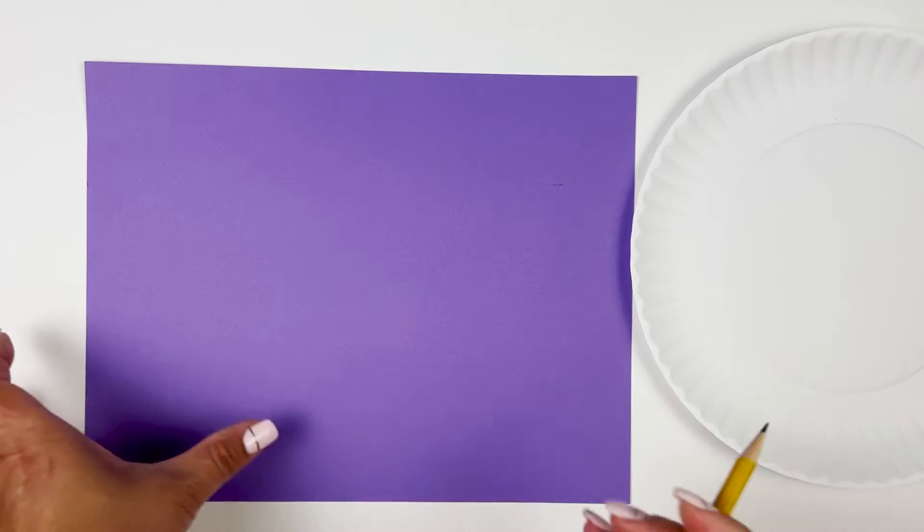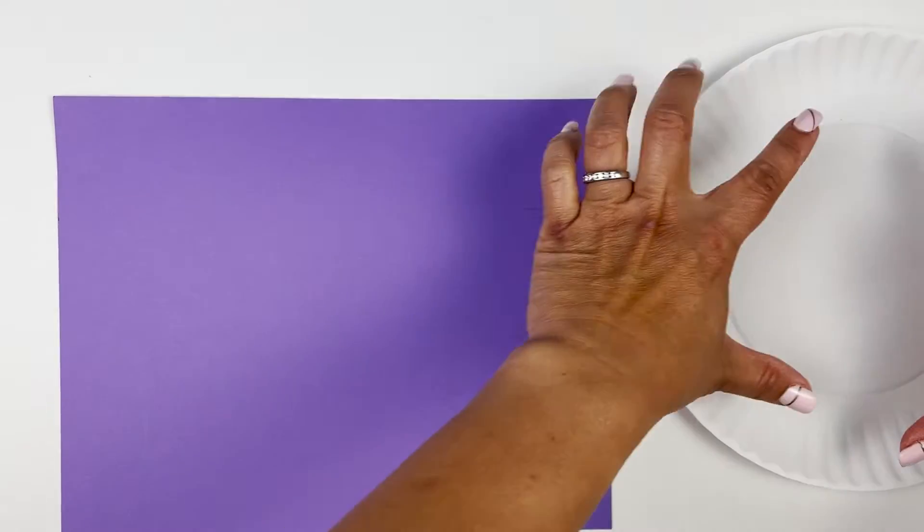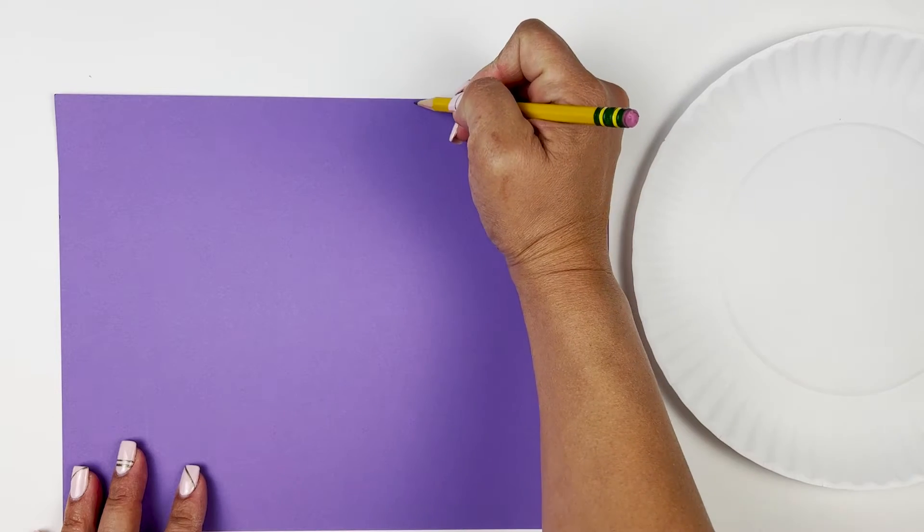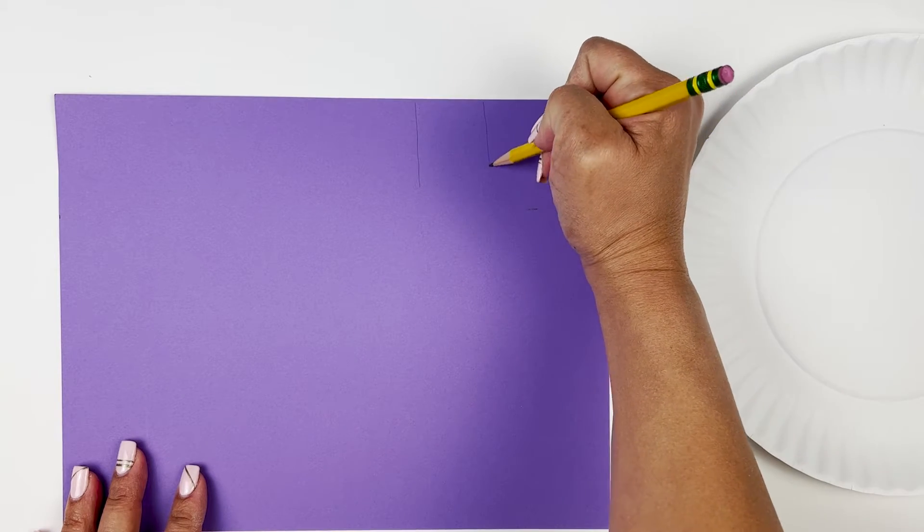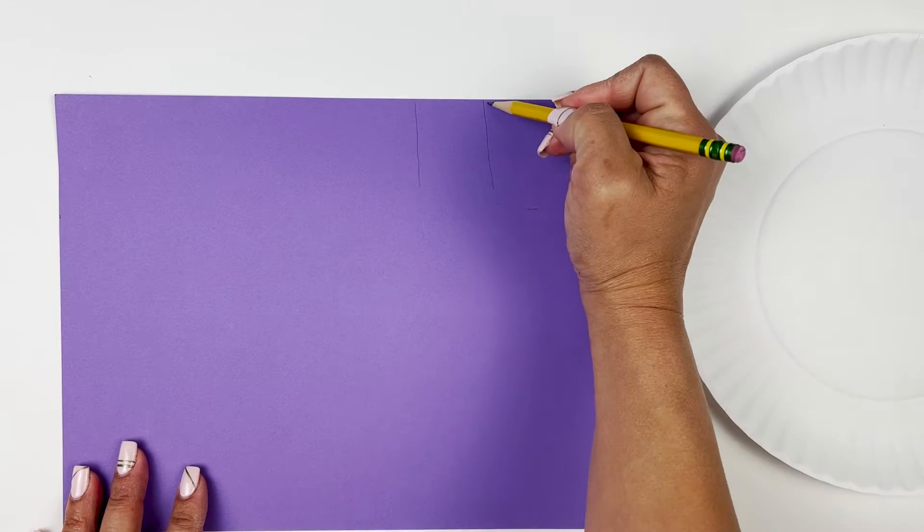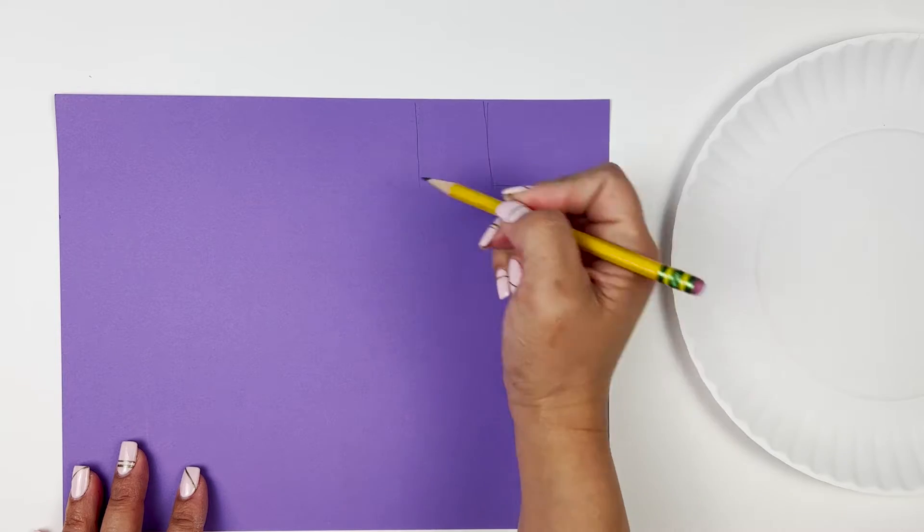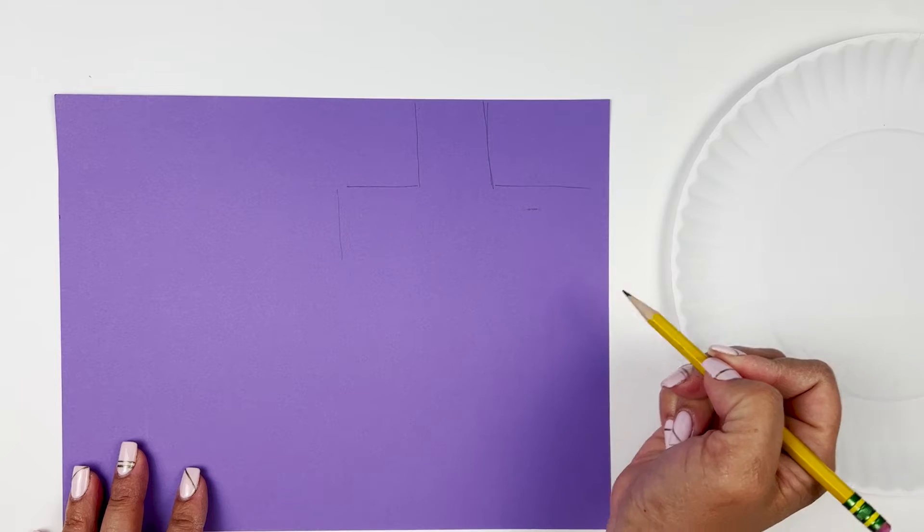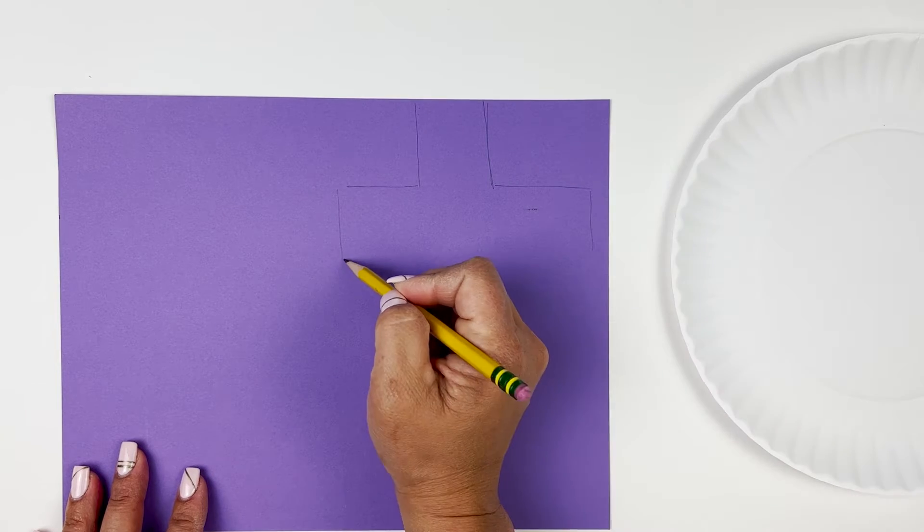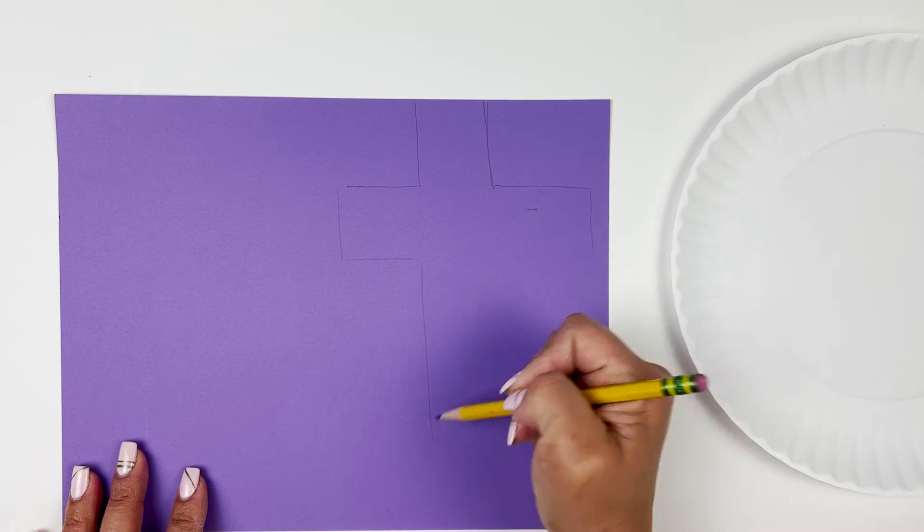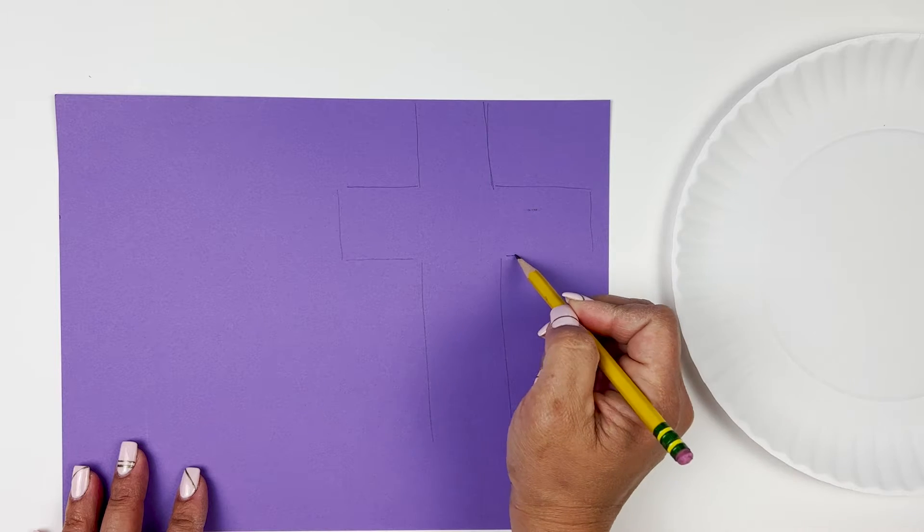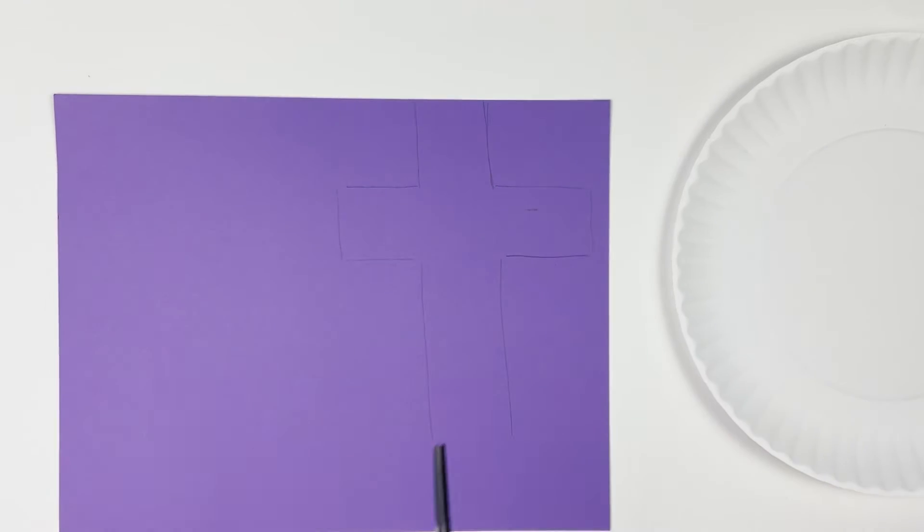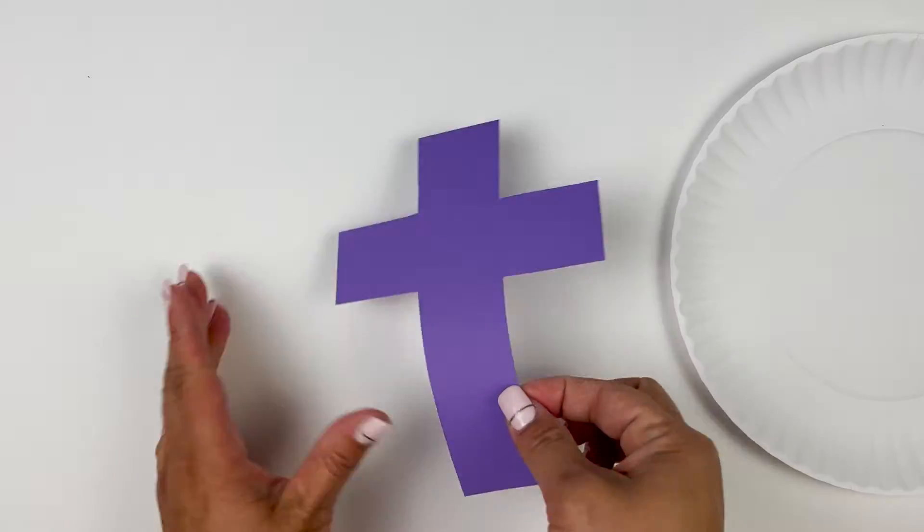The first step is to draw your cross so that you can fit right in the center of your piece of paper. We're just going to create our cross and with our scissors we're going to cut it out. And here's your cross all cut up.